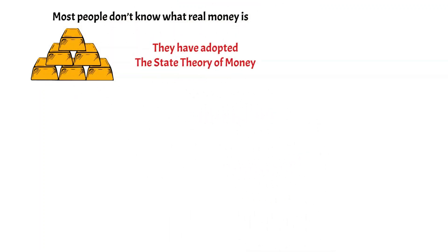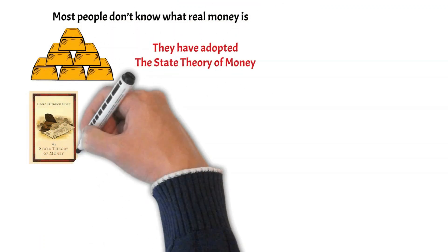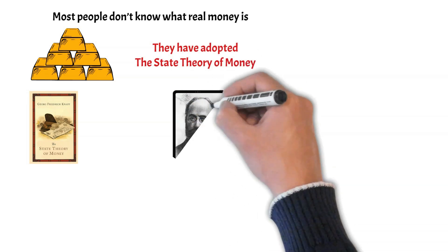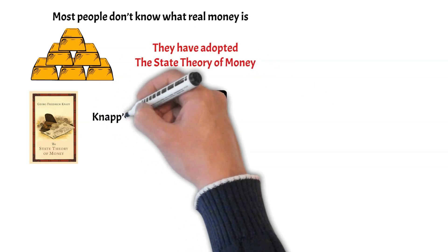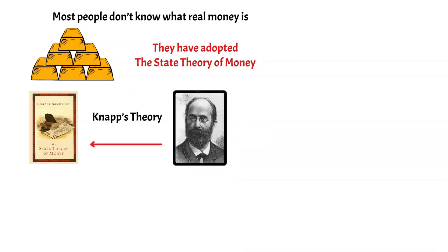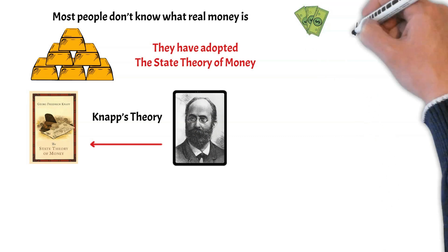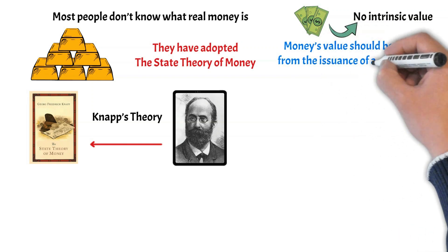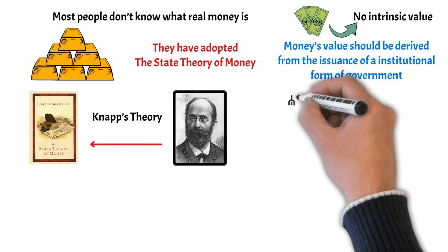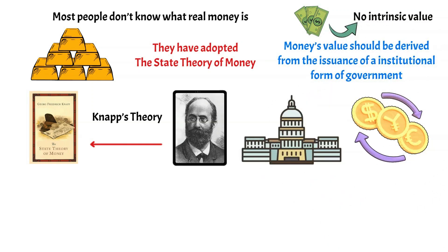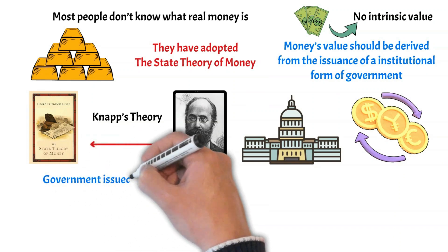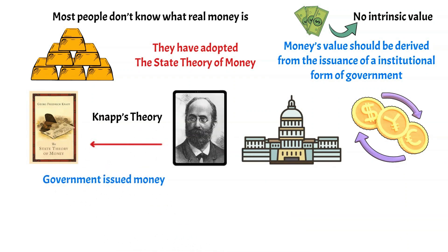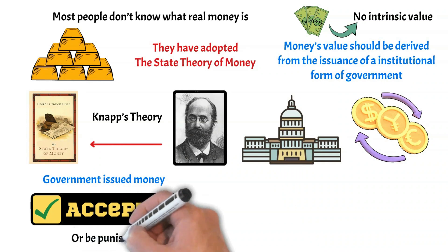The sad truth is that most people don't know what real money is, and they have adopted what's known as the state theory of money. The state theory of money is a theory put forward by a German economist named George Friedrich Knapp, and it is the title of his book published in 1905. His theory takes the stance that money must have no intrinsic value, and that money's value should be derived from the issuance of an institutional form of government rather than spontaneously through relations of exchange.